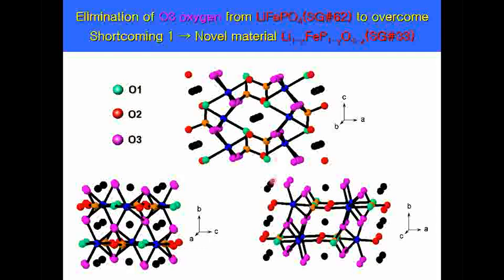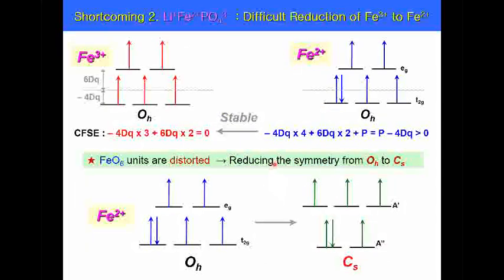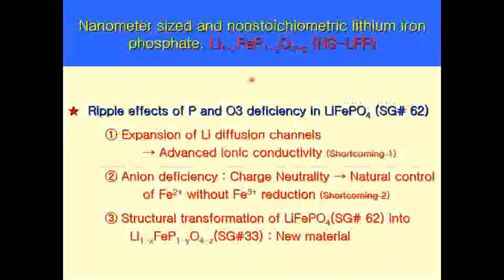One more advantage of the oxygen-poor crystal is that it provides a poor oxygen environment in the crystal, so one can prevent formation of Fe3+. In addition, in terms of crystal structure, the oxygen-poor structure deforms the crystal, and we can generate a totally new type of crystal structure, which is also free from patent issues. Our focus will be the reduction of oxygen number in the crystal.